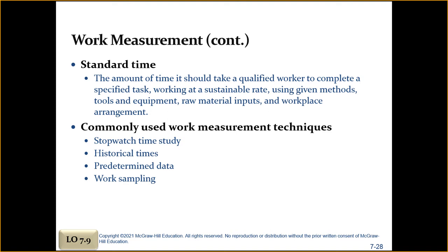The stopwatch time study is used to develop a standard based on observations of one worker and how long it takes them to complete something. There are four basic steps: first, define the task to be studied and inform the workers being monitored; second, determine the number of cycles to observe — in statistics, over 30 samples is a large sample, which helps identify variations; third, time the job and rate the worker's performance; and fourth, compute the standard time.